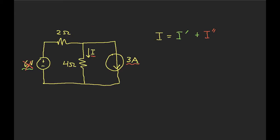Okay. In other words, the currents and voltages created in a circuit are the algebraic sum, or the superposition, of the currents and voltages created by each independent source.